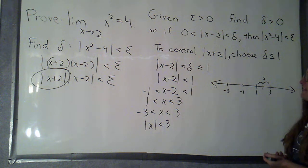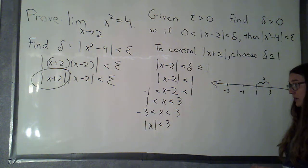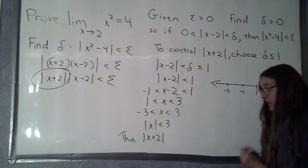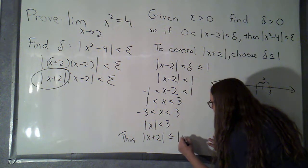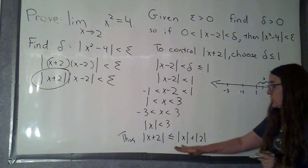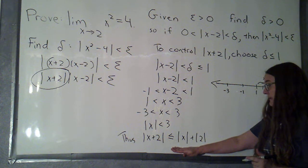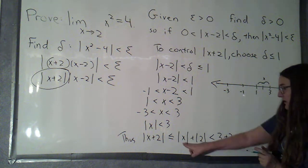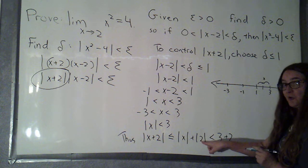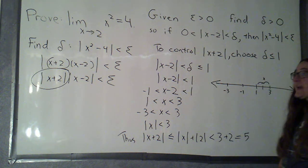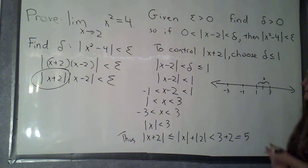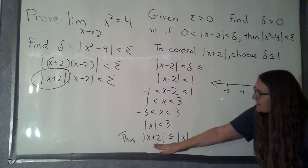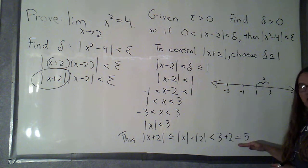Now, using that in conjunction with the triangle inequality, I can say that the absolute value of x plus 2 is going to be less than or equal to the absolute value of x plus the absolute value of 2 — that's by the triangle inequality. But now I know that's less than 3 plus 2. I know that this is less than 3 and I know that this is equal to 2, so that's going to be 5. So by making this executive decision that delta is no bigger than 1, I can control that the absolute value of x plus 2 is smaller than 5.